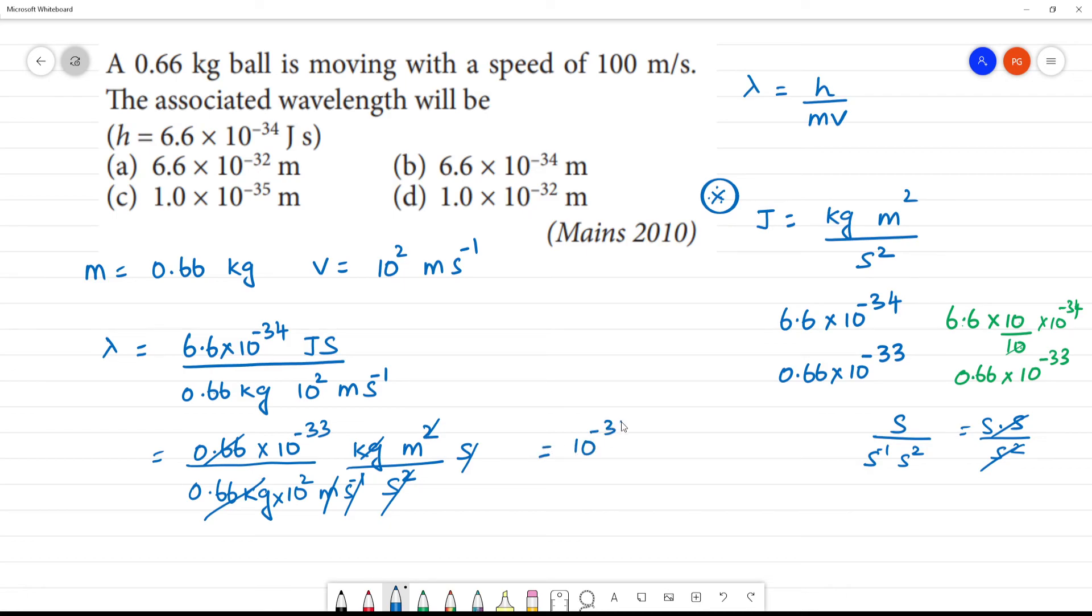10 power minus 33 into 10 to the power minus 2, that is equal to 10 to the power minus 35 meter. So 1 into 10 to the power minus 35 meter, this is your answer.